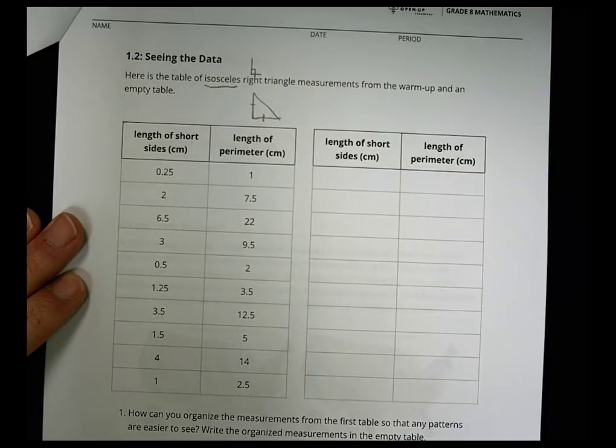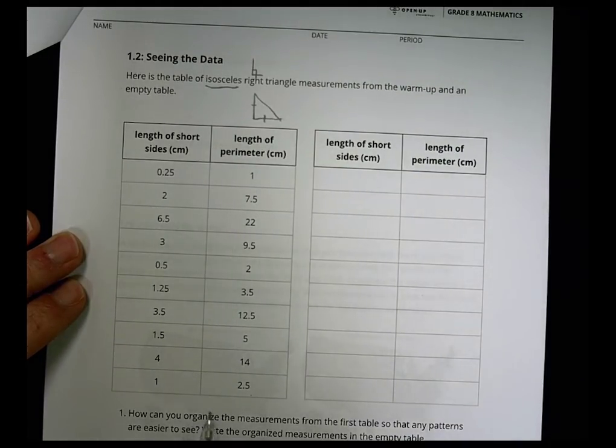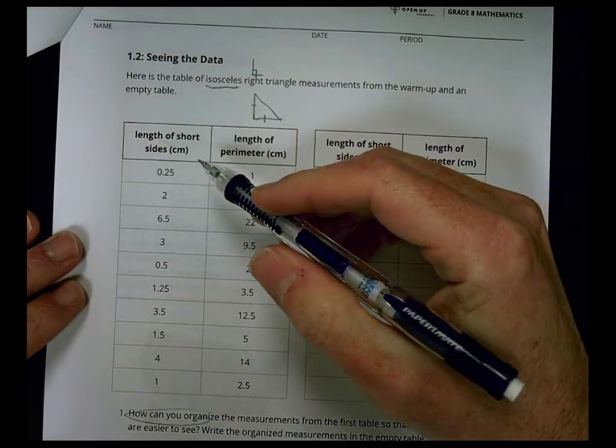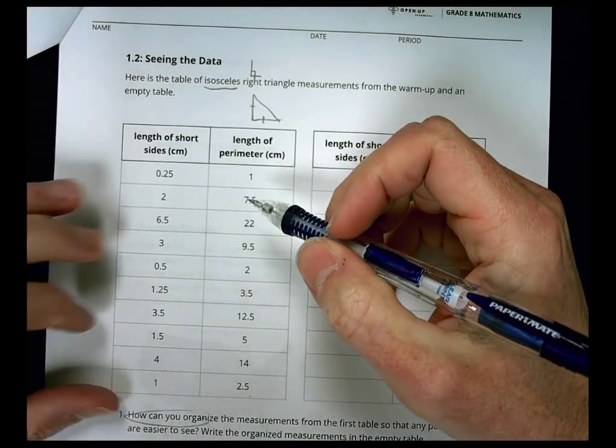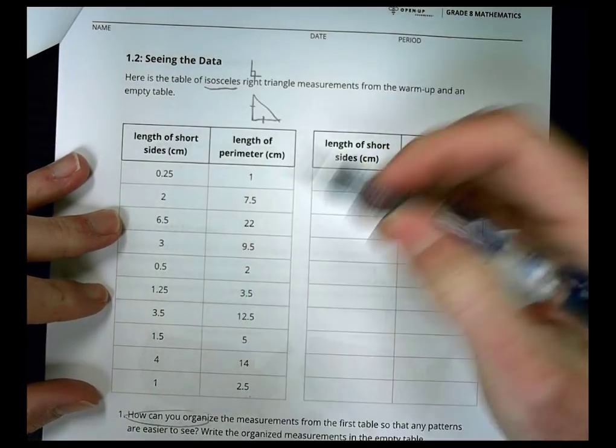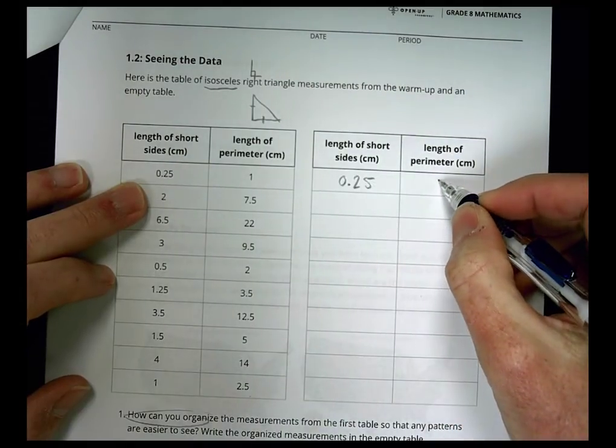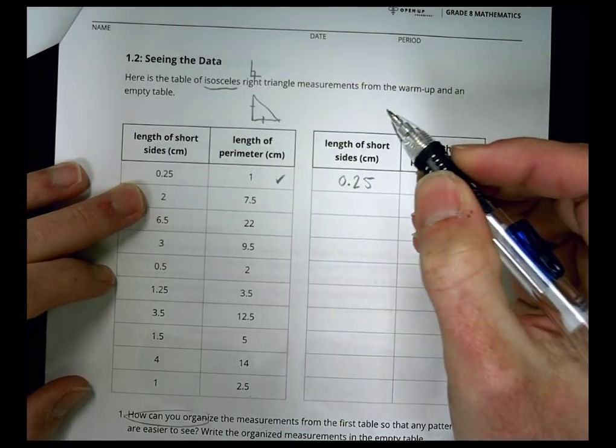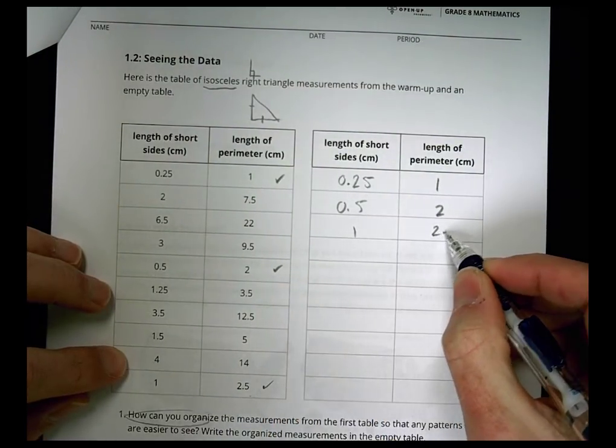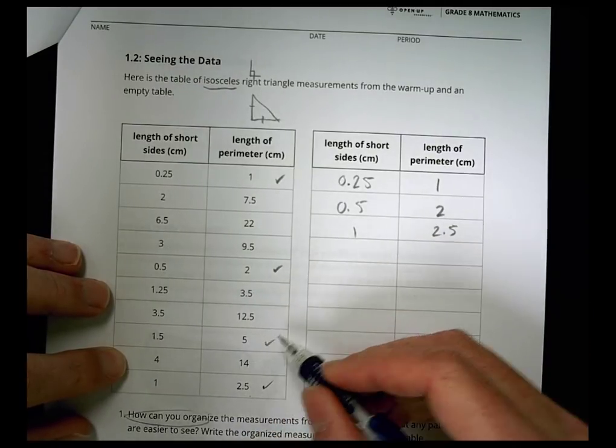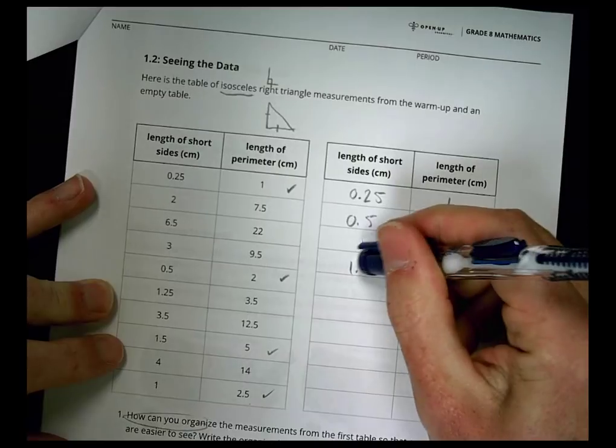First, it asks how can you organize the measurements from the first table so that any patterns are easier to see? Then write the organized measurements in the table. One thing we noticed was that when you're working with this data, everything is scattered and out of order. It would make the most sense to put these in numerical order, starting with the smallest and working to the largest.